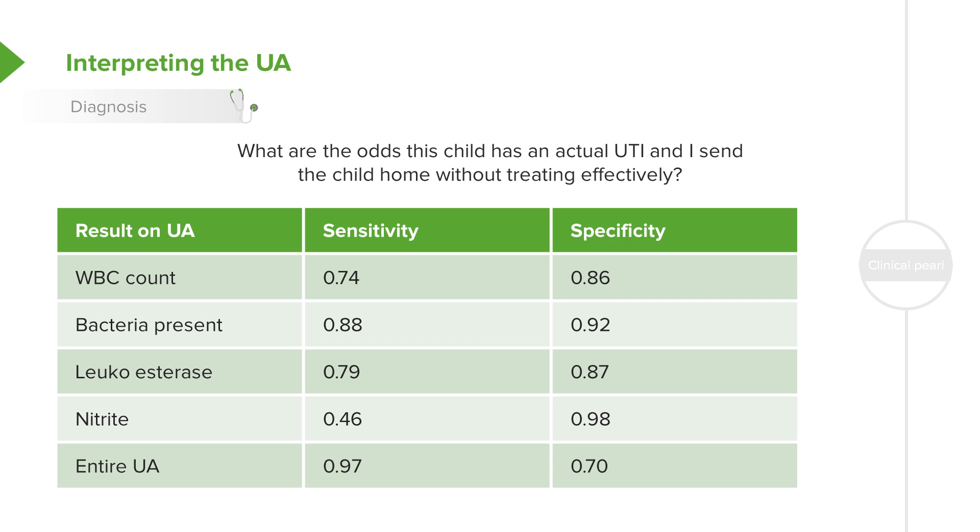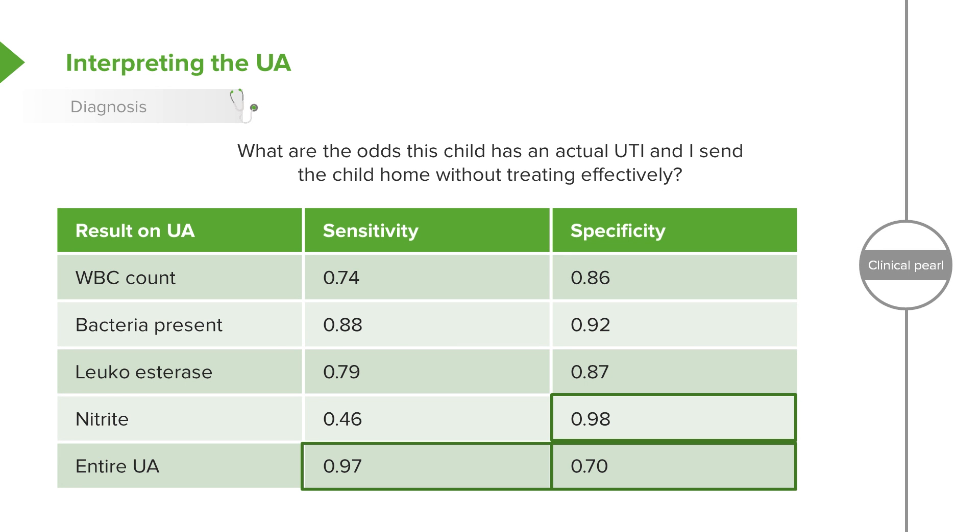Overall, the UA is a very sensitive test. It's ninety-seven percent sensitive and has a high false positive rate, thirty percent false positive rate. So if a patient has a UTI, it's almost always positive, but it can be positive in normal individuals. Remember those three numbers.